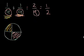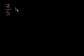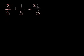Let me do a couple more examples. What is 2/5 plus 1/5? We first check to make sure the denominators are the same. If the denominators are the same, the denominator of the answer will be the same, and we just add the numerators. 2/5 plus 1/5 is just 2 plus 1 over 5, which equals 3/5.